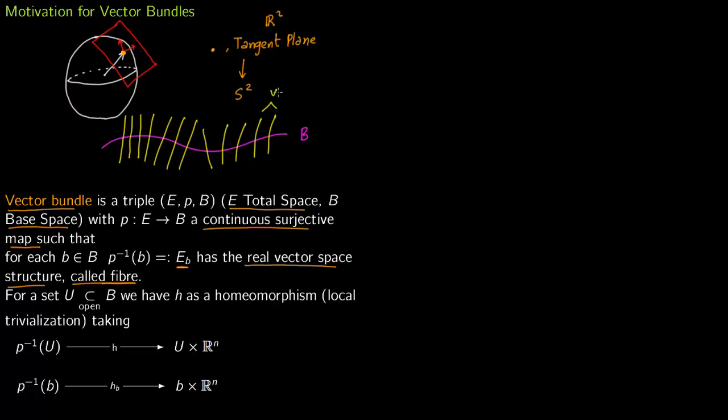So B is a topological space and E is the total space. So this E contains B as well as these attached vector spaces. So this is a way to picture a vector bundle and each of these lines is a fiber. So for an open set we have a homeomorphism, you also call it local trivialization.